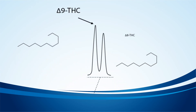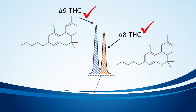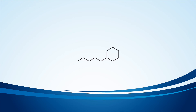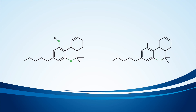While the difference in these two structures is very minor, we're still able to separate these two forms of THC chromatographically, giving cannabis testing labs the ability to confirm the presence and concentration of these two compounds. It's amazing how such a small change in the position of a double bond can make such a large impact on the properties of these two structures — and even more amazing is how we can use the power of chromatography to separate these two isomers.